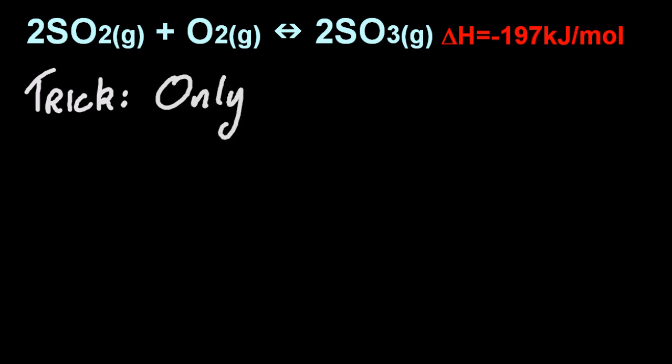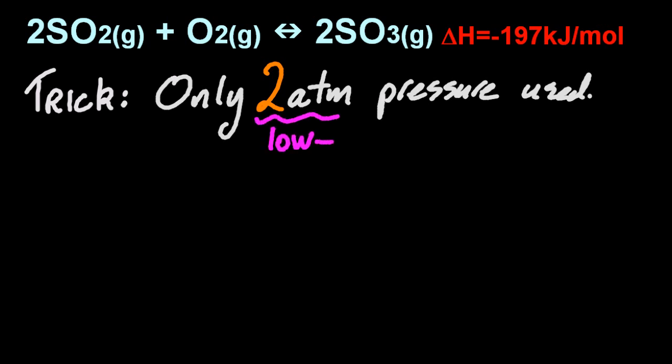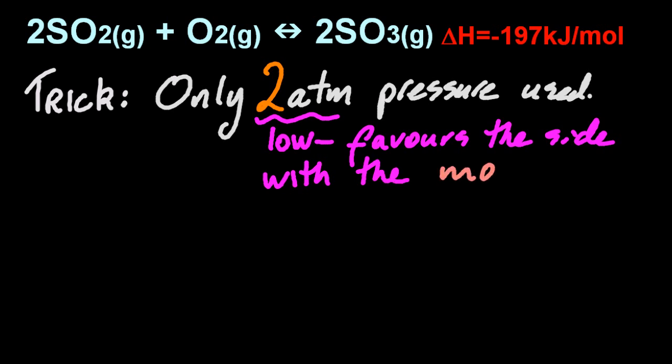Now, the last bit is a little trick the IB like to ask this, because it's like a stinger question, the last point in a 25-point question that is unlikely to be got right. It's only two atmospheres are used in the contact process, and that is low for an industrial process, and that favors the reactants, the side with the most gas particles. It shifts to increase the pressure, because it's a low-pressure reaction. Well, how does that make any sense from what we just learned? Well, you know what? This still gives a great yield.